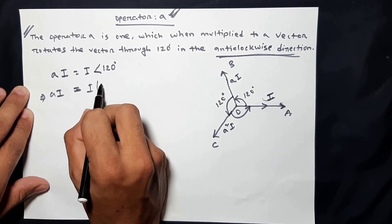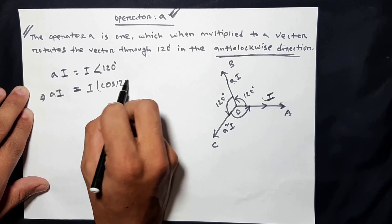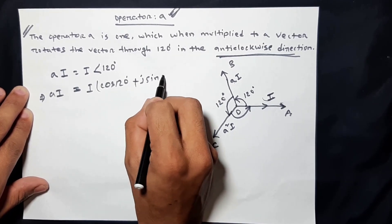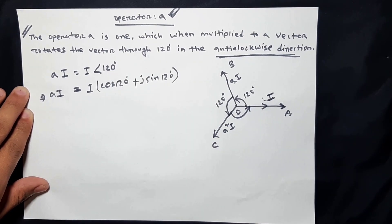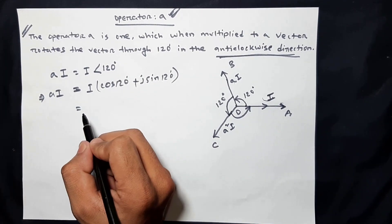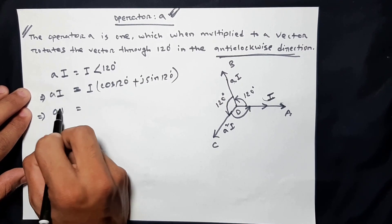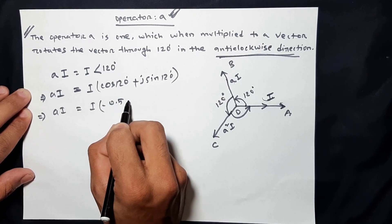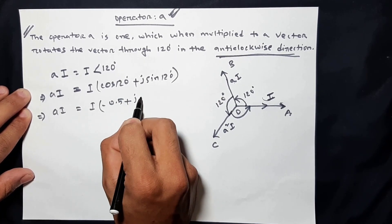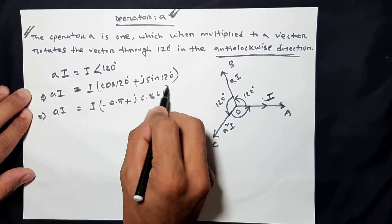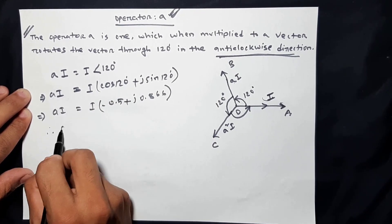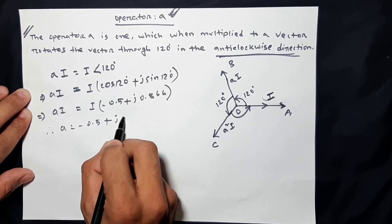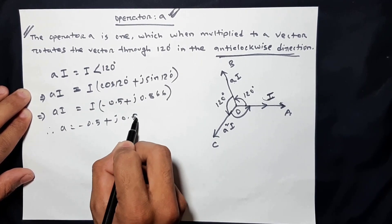A is equal to cos 120 degrees plus j sin 120 degrees. If we calculate this, A is equal to minus 0.5 plus j 0.866.